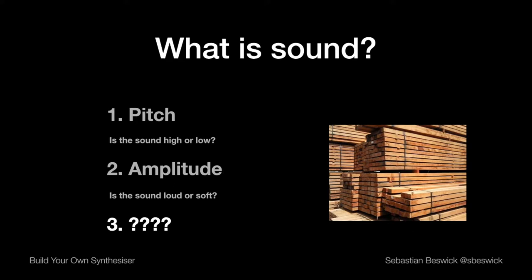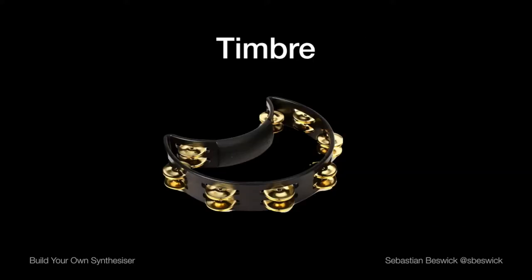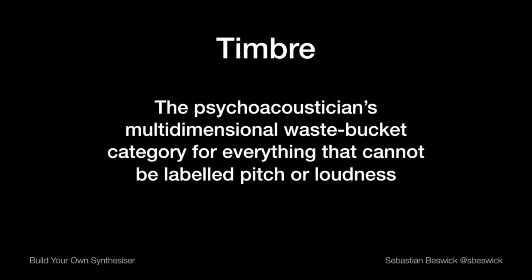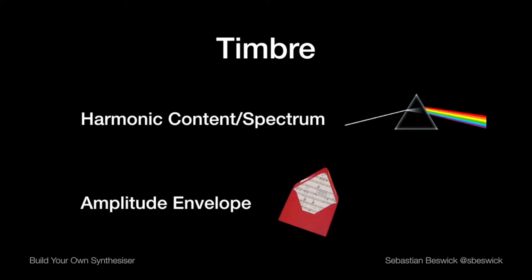Two very important defining characteristics of sound are its pitch and its amplitude — whether it's high or low, and whether it's loud or soft. I'm going to play three sounds that have the same pitch and amplitude but sound quite distinct. The difference is a thing called timbre. A sound's timbre is what allows us to quantify the difference between two sounds when they have identical pitch and amplitude — sometimes referred to as tone colour. We can break timbre down into two basic physical properties: its harmonic content or spectrum, and its amplitude envelope.